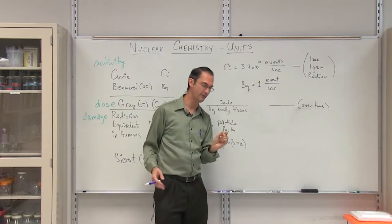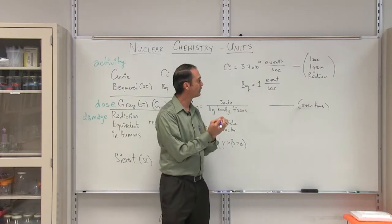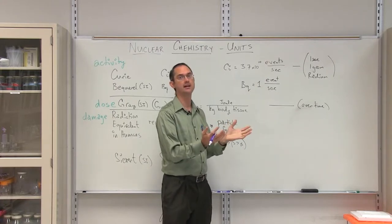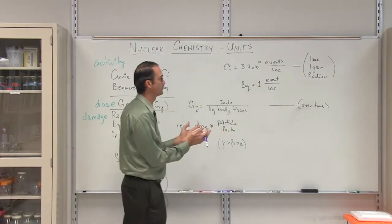So if you take radium, you have one gram of it, and you wait for one second, you're going to have 3.7 times 10 to the 10 events every second. And that then is what one Curie is.